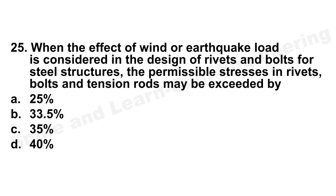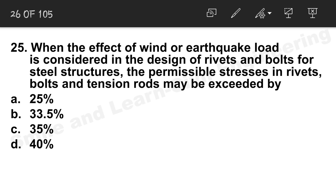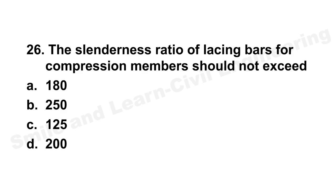Question 25: When the effect of wind and earthquake load is considered in design of rivets and bolts for steel structures, the permissible stress in rivets, bolts, and tension rods may be exceeded by 25 percent. Option A is the correct answer.